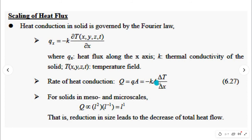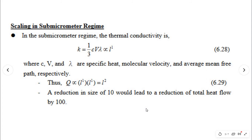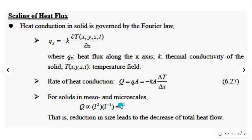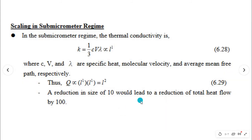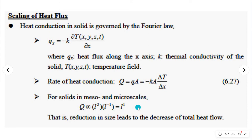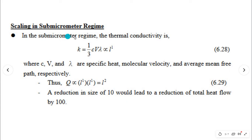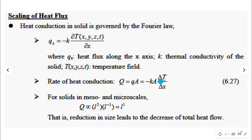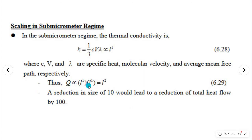We are only considering A and Δx in the case of meso and micro scales. But when considering the sub-micrometer regime, k is proportional to L¹. So we write L¹ for k. The rest gives L¹ as before. Therefore in the sub-micrometer regime, Q is proportional to L¹ (for k) times L¹ (for the remaining terms), giving Q proportional to L². This means a reduction in size by 10 would lead to a reduction of total heat flow by 100.